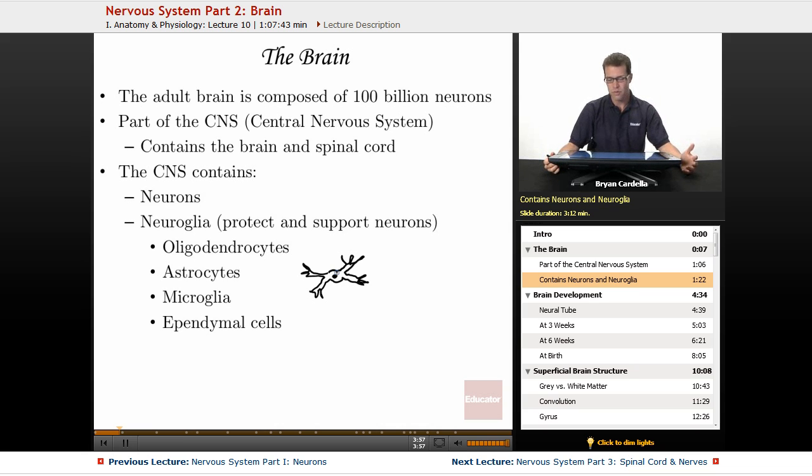Finally, the ependymal cells. You're going to find these around the ventricles, which are little hollow cavities inside the brain, and the central canal, another cavity in the spinal cord.